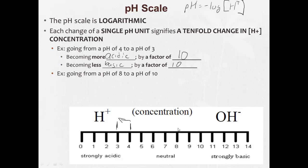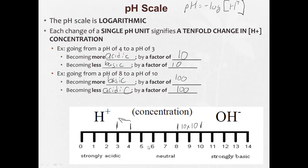What if we go the other way? Going from 8 to 10. Well, it's becoming more basic by a factor of—now here's the important part, we multiply. Going from 8 to 9 is 10. Going from 9 to 10 is 10, so we have 10 times 10. So becoming more basic by a factor of 100. Becoming, now the opposite, less acidic, also by a factor of 100.